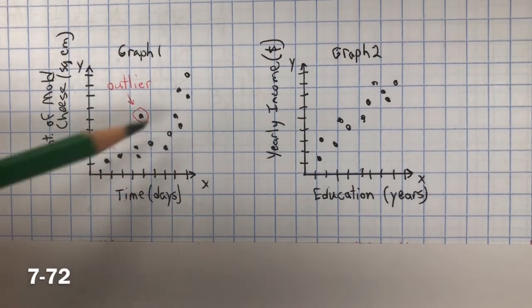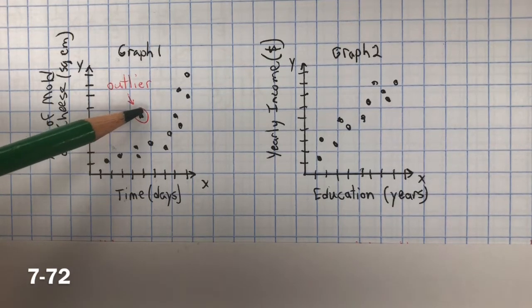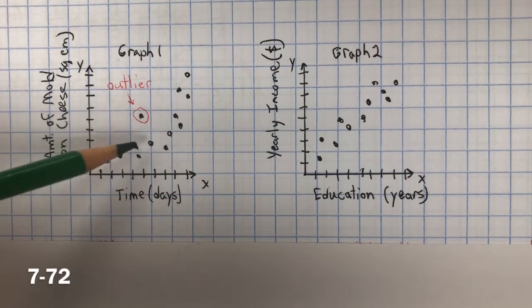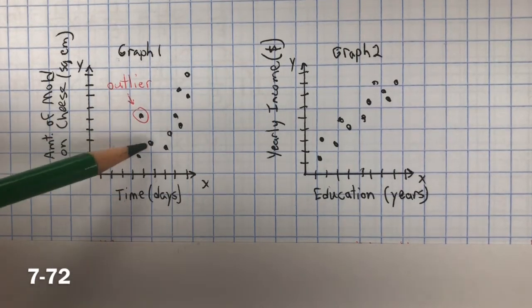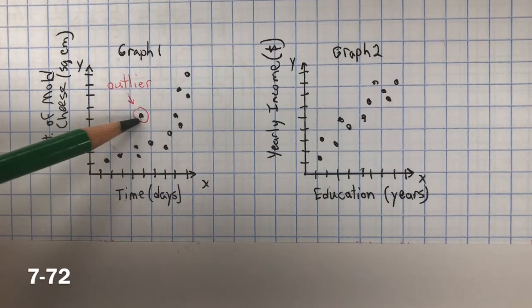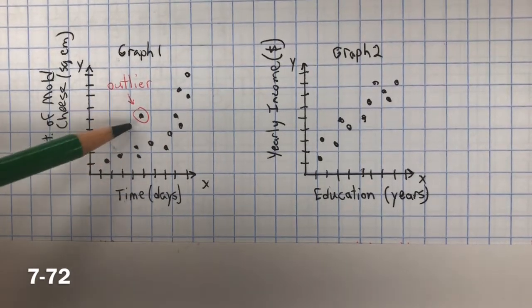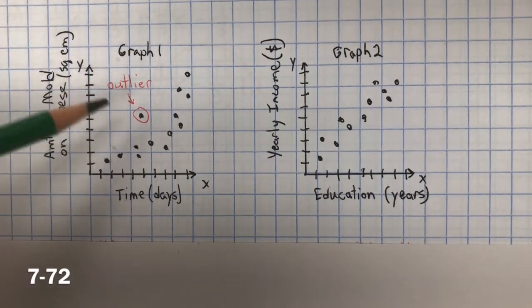It has a positive association. This is called an outlier, where you have a point in the data set that's much greater or less than the rest of the data points, and you can see that this one is not following that. You want to disregard outliers when you're thinking of positive, negative, or no association.